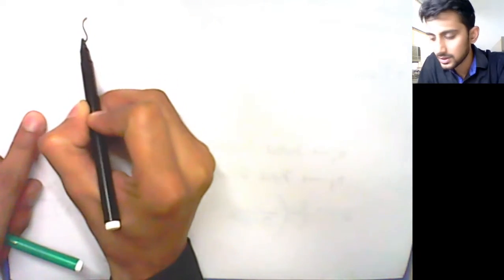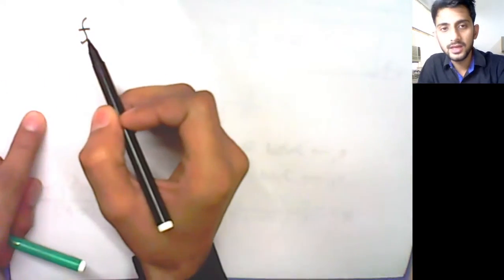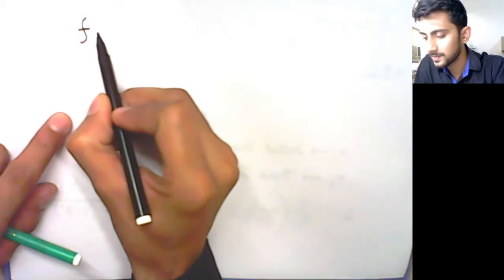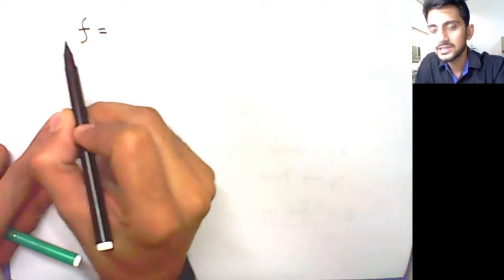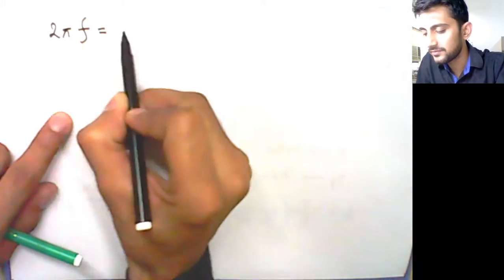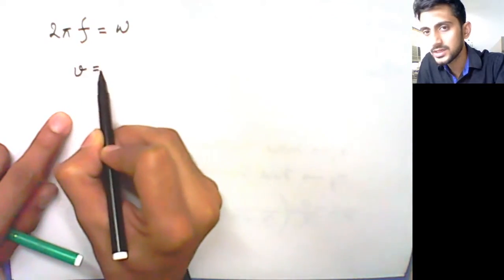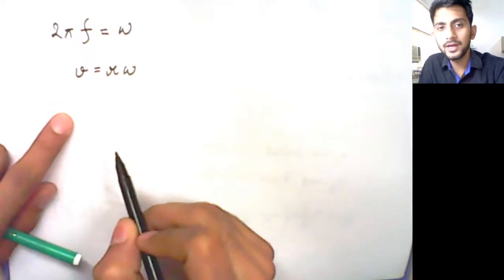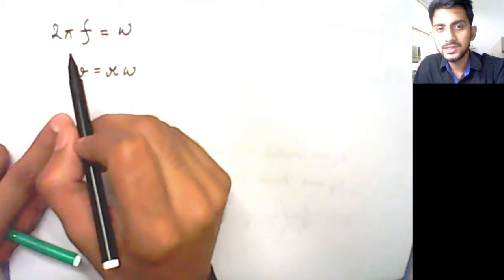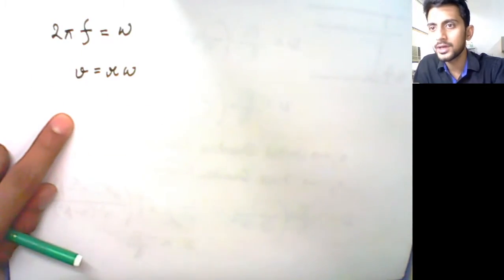Welcome back! Unfortunately in the last video there was some technical glitch and we could not complete the topic. So we were trying to find out the equation for frequency, which we consider as 2πf equals omega, and from velocity equals r omega, we are finding the frequency of revolution of an electron in an orbit.